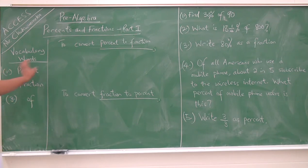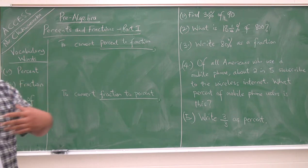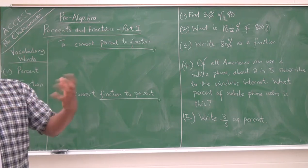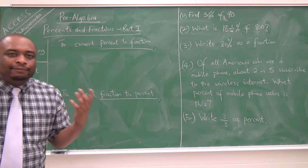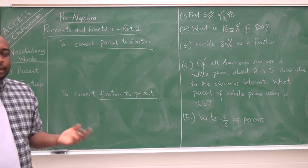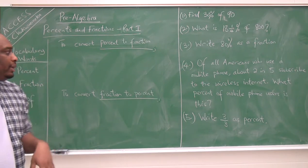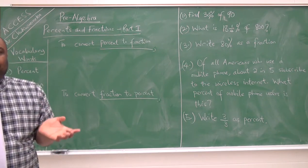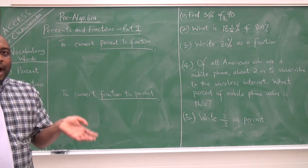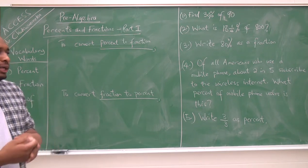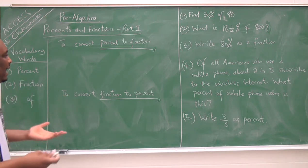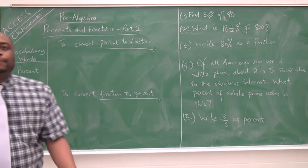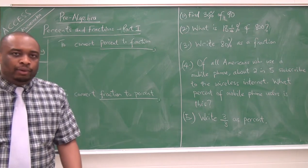We know that percent of something means that thing out of 100. If I have 20%, it means 20 out of 100. If I have 35%, it means 35 out of 100. If I have 40%, it means 40 out of 100.